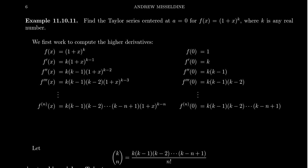The zeroth derivative is just the function itself: (1+x)^k. Taking the first derivative by the power rule gives k·(1+x)^(k-1). The second derivative gives k(k-1)·(1+x)^(k-2), the power goes down. The third derivative gives k(k-1)(k-2)·(1+x)^(k-3), and so on.